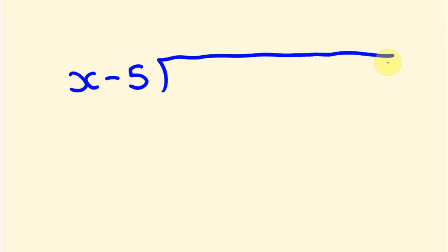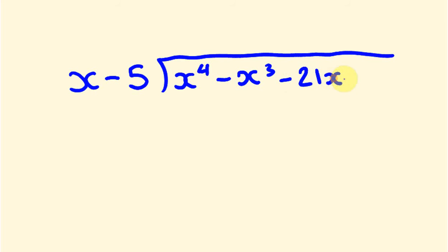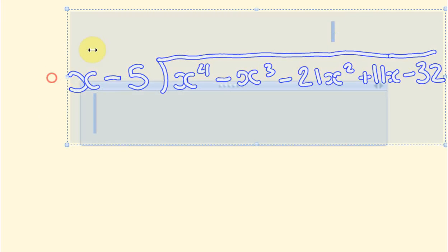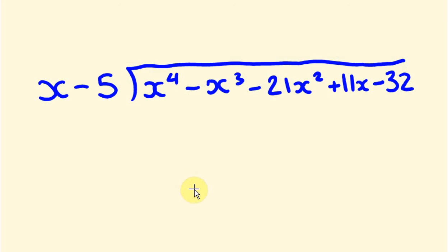I'll write the next question down. This will take a little bit of getting used to, so don't give up after just looking at that last one. We're going to divide x minus 5 into x to the power of 4, take away x to the power of 3, minus 21x squared, plus 11x, take away 32. We're going to directly divide this, so let me move it across to center it — and we'll get no working out below.